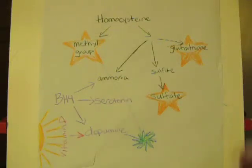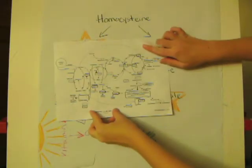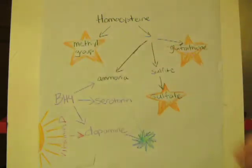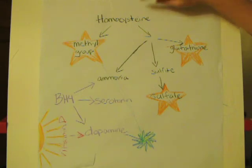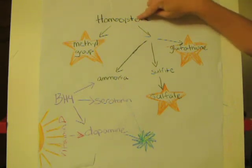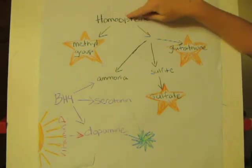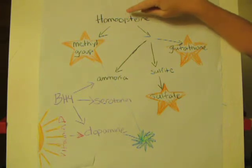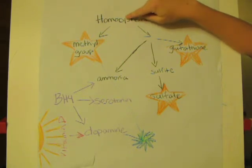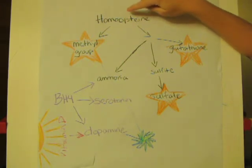This is my simplified version of that chart. I'm starting with homocysteine — I need a place to start, and it seems like that's sort of the center of where the imbalances can happen. Now if you have a molecule of homocysteine, it has two choices.